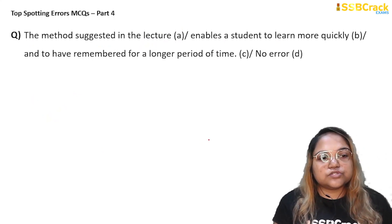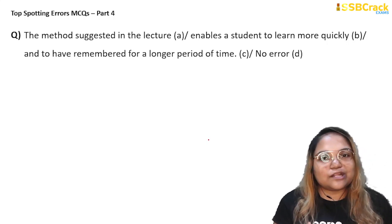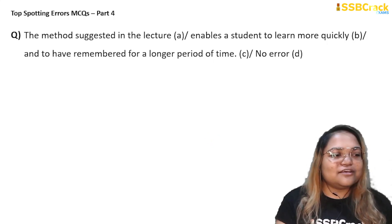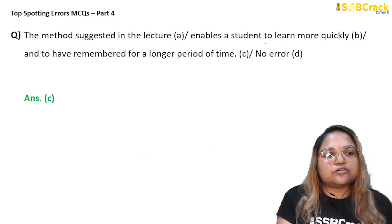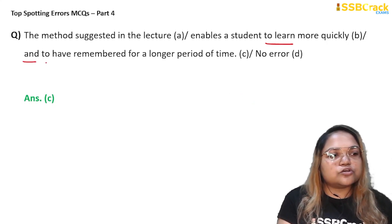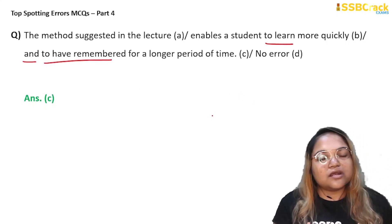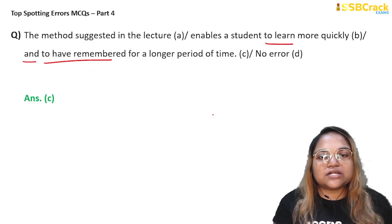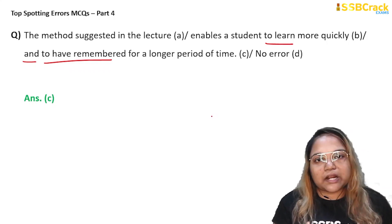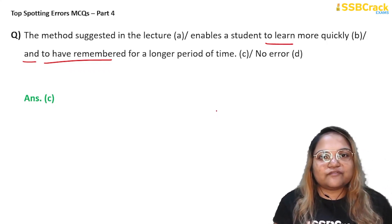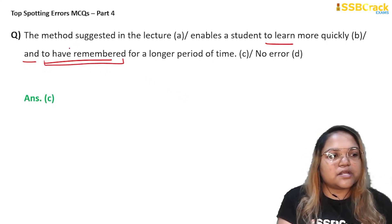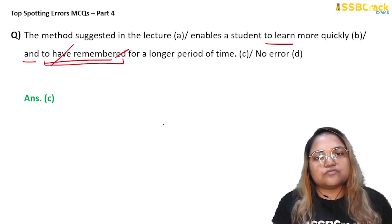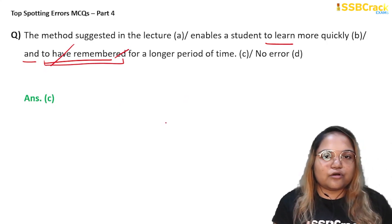Next question: 'The method suggested in the lecture enables a student to learn more quickly and to have remembered for a longer period of time.' Reading the sentence, your ears will catch the error in part C. The conjunction 'and' connects 'to learn' (an infinitive) with 'to have remembered' (a perfect infinitive) — but when a coordinating conjunction joins two elements, they must be the same part of speech. Both should be simple infinitives. So instead of 'to have remembered,' it should be 'to remember for a longer period of time.' Answer: option C.